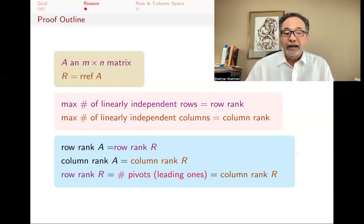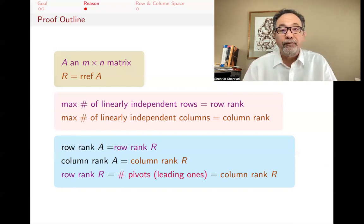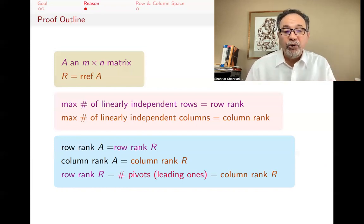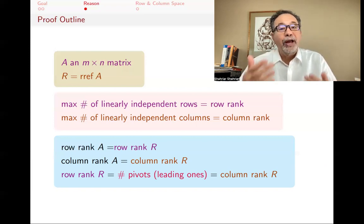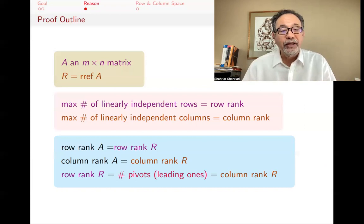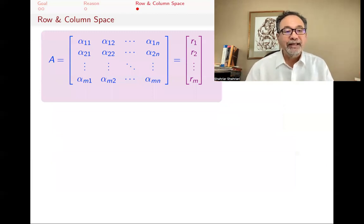That then proves the theorem. Why? Because for R, the reduced row echelon form of A, the column rank and the row rank are both equal to the number of pivots — the number of leading ones. And since the row rank of A equals the row rank of R, and the column rank of A equals the column rank of R, they must all be the same. That's the argument. Now I'm going to expand on that.